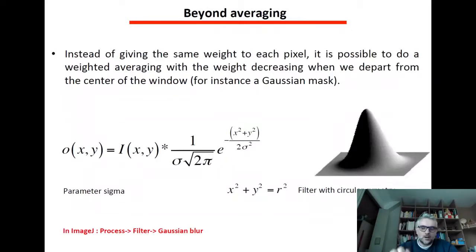Instead of averaging democratically with same weights to all neighbors, it's likely that the farther you are from the pixel you want to process, the less likely you can make the assumption that you are still at the same gray level value.